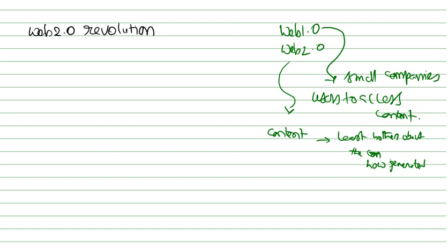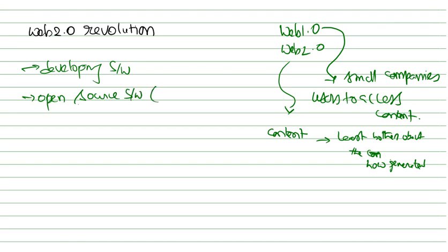When we talk about architecture, it plays a significant role in developing software. Web 2.0 helps in developing a type of software called open source software — that is the main key point to remember. Open source software is nothing but software which is freely available; there is no need to buy it.